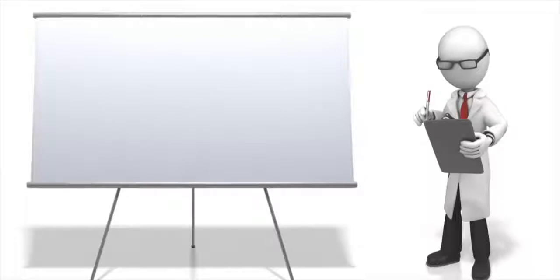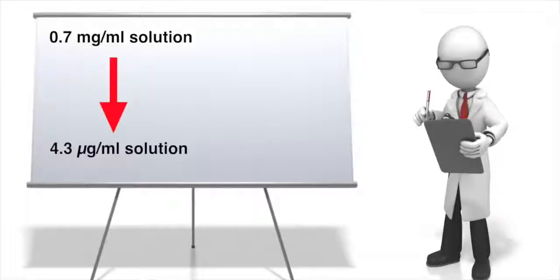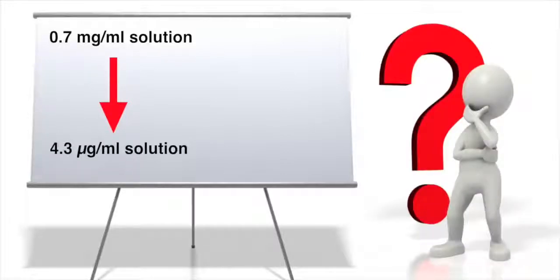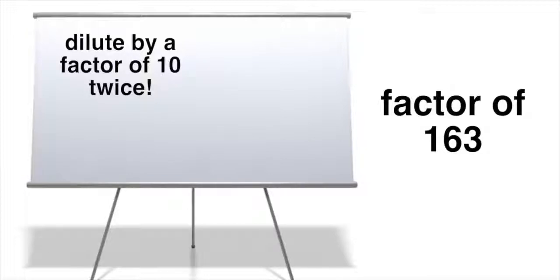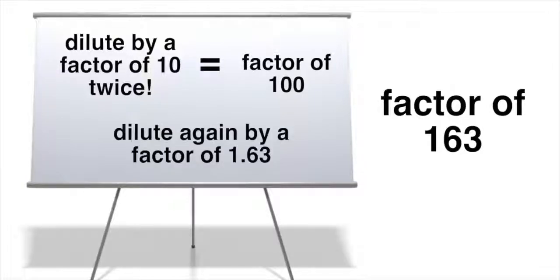So as a final example, suppose you start with a solution of say 0.7 milligrams per milliliter, and you want to knock it down to something like, I don't know, 4.3 micrograms per milliliter. How might you do that? First, you divide what you have by what you need, that's 0.7 milligrams per milliliter by 4.3 micrograms per milliliter. Putting that into my calculator, I get that's a factor of 163. So I need to dilute the sample by that factor. So to get there, I'll dilute it by a factor of 10 twice to get a factor of 100 total. Then I dilute it again by a factor of 1.63. So how can I do that?